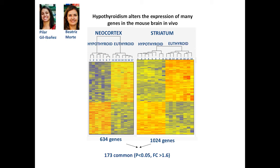Comparing hypothyroid versus euthyroid control, you can see that there are genes that are down-regulated and many genes that are up-regulated, both in the striatum and the neocortex. But interestingly, from 334 genes altered in the neocortex and 1,000 in the striatum, there are only 173 common between the two regions. That makes the analysis extremely difficult because we don't know which genes are directly responsive to thyroid hormones versus altered as a consequence of organismic hypothyroidism and not representing the real action of thyroid hormone in the brain.